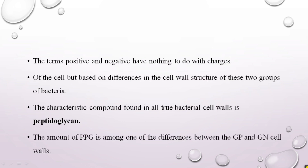The terms positive and negative have nothing to do with charges, but are based on the differences in the cell wall structure of these two groups. The characteristic compound found in all true bacterial cell walls is peptidoglycan — the mandatory cell wall component present across all true bacterial cells. The amount of peptidoglycan is one of the key differences between gram positive and gram negative cell walls.